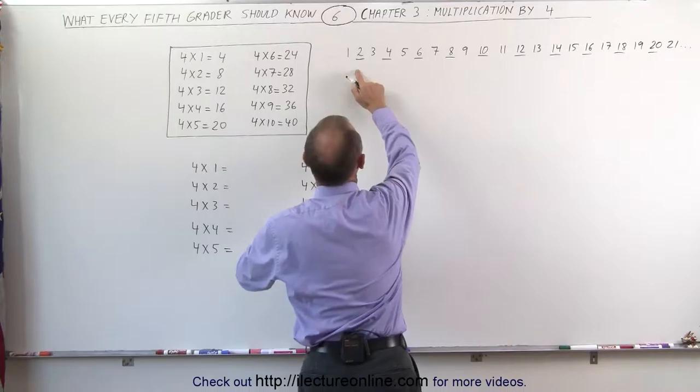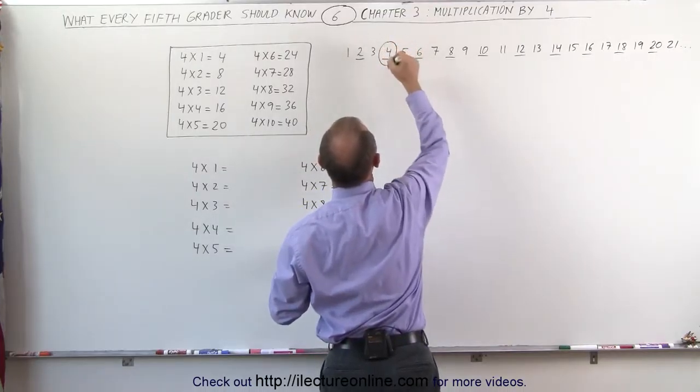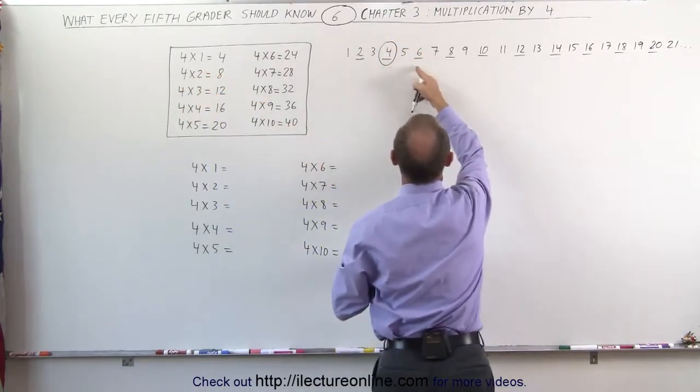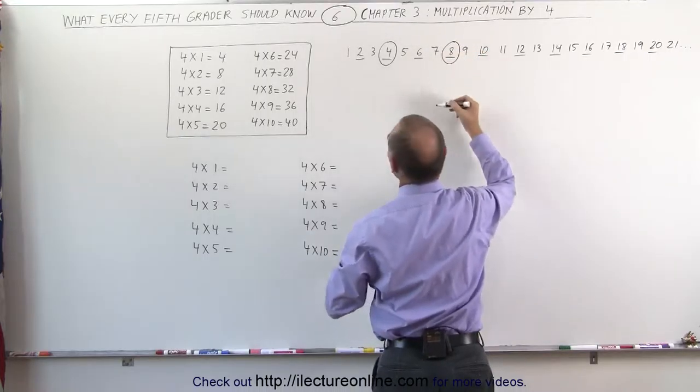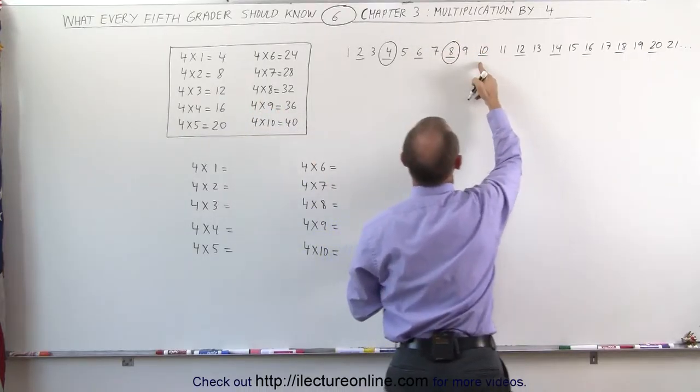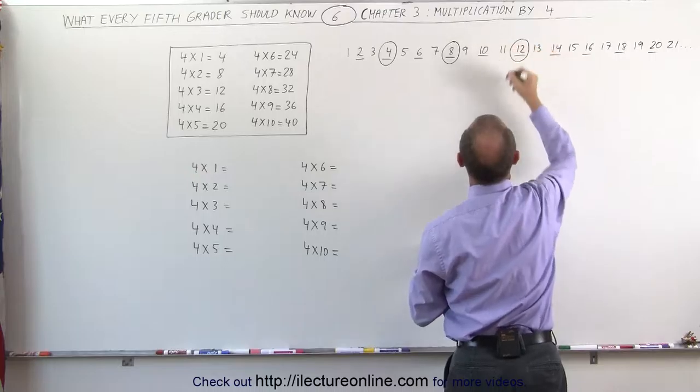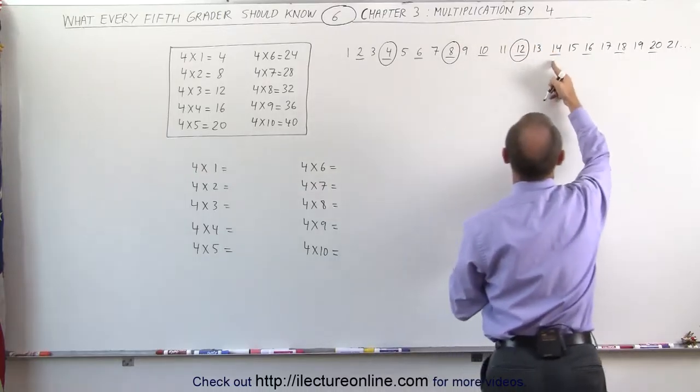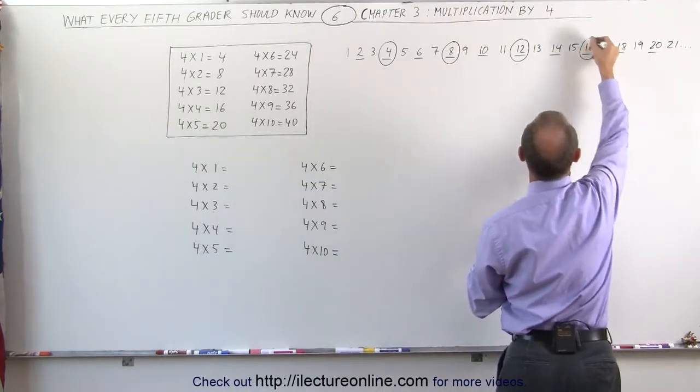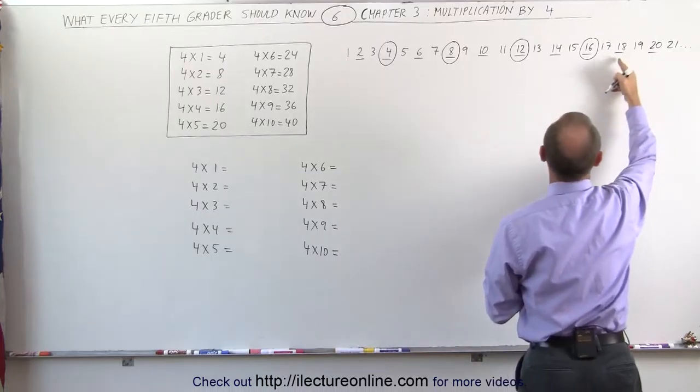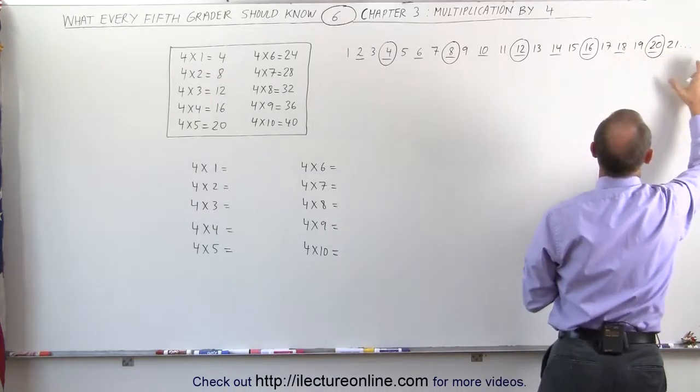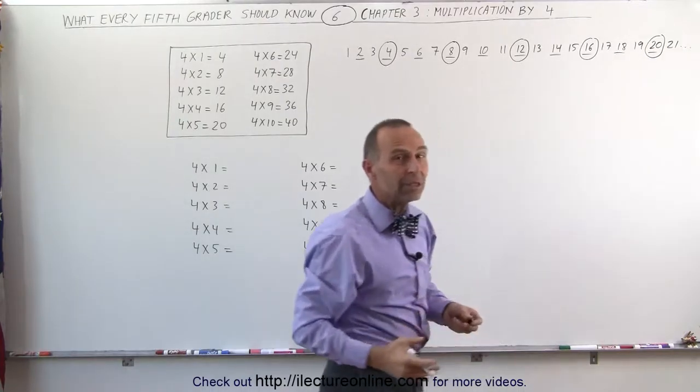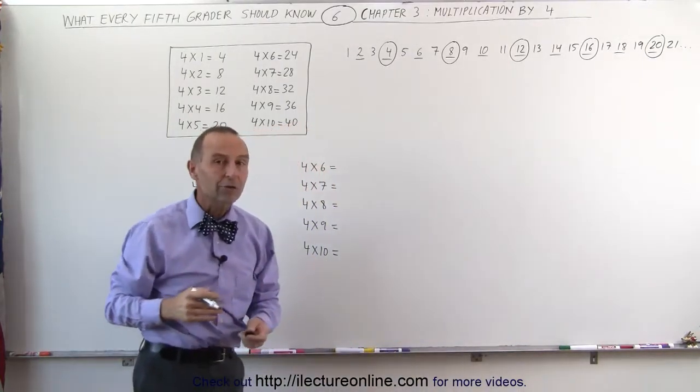In other words, we skip the first one and take the second one, and that's the answer to 4 times 1. Then we skip this one, take the next one, and that is the answer to 4 times 2. This pattern continues—skip one, take the next—and you take every other even number, which gives us the multiplication table when we multiply times 4.